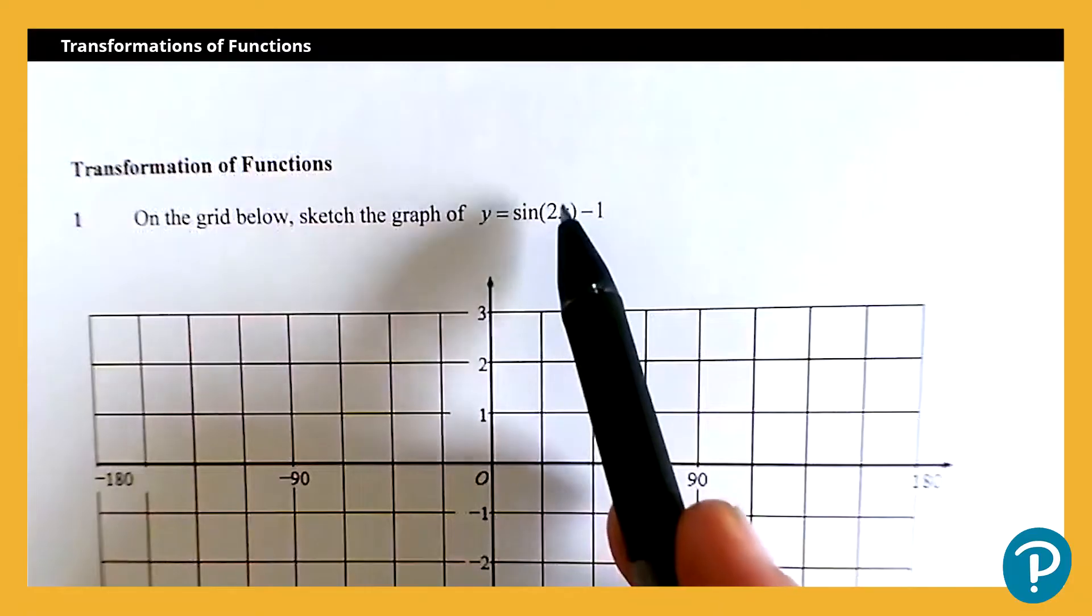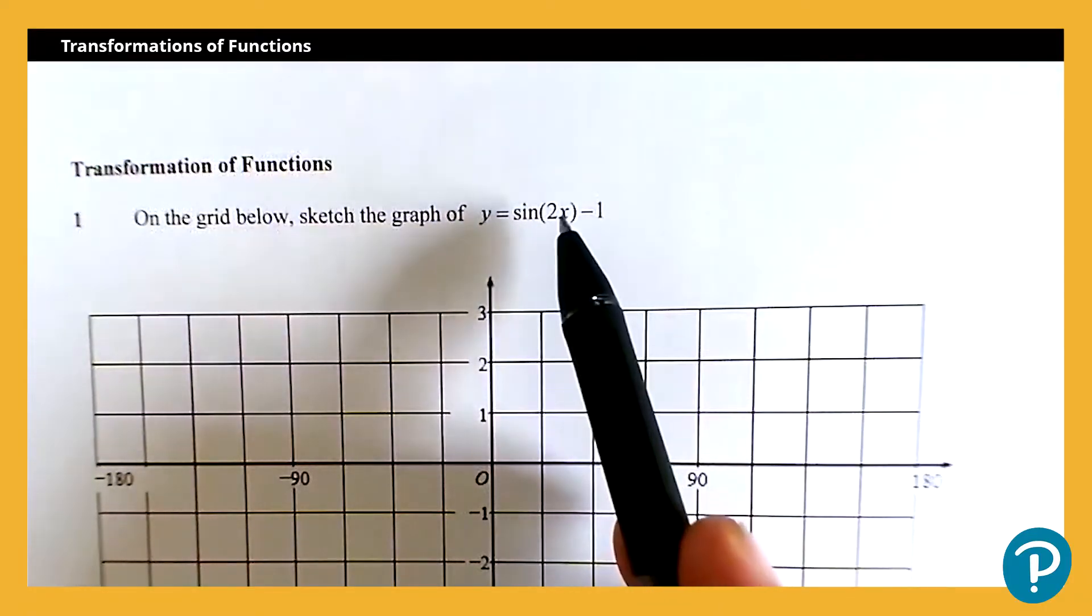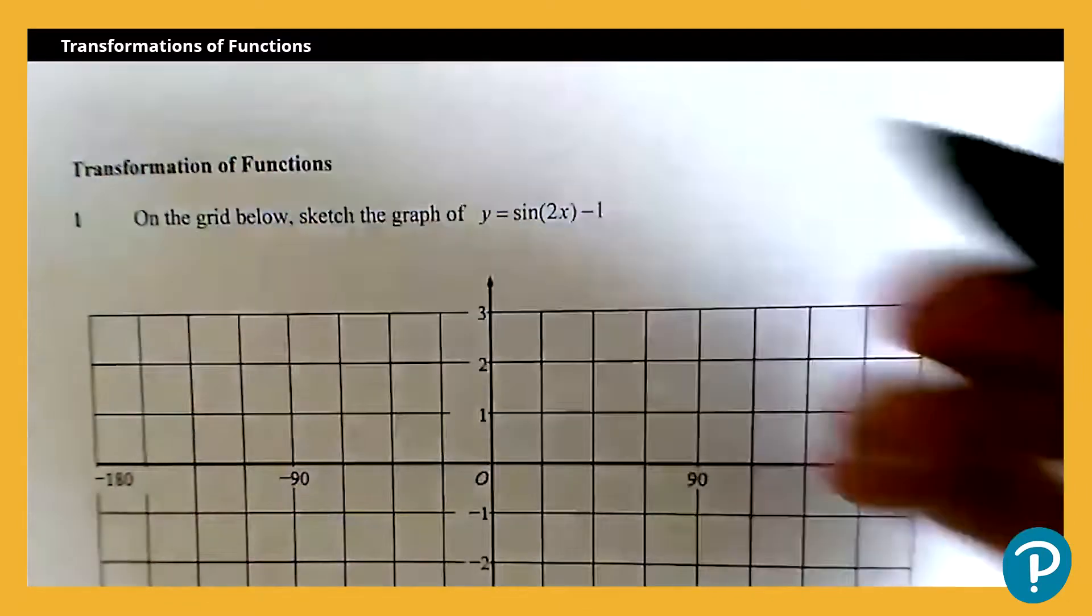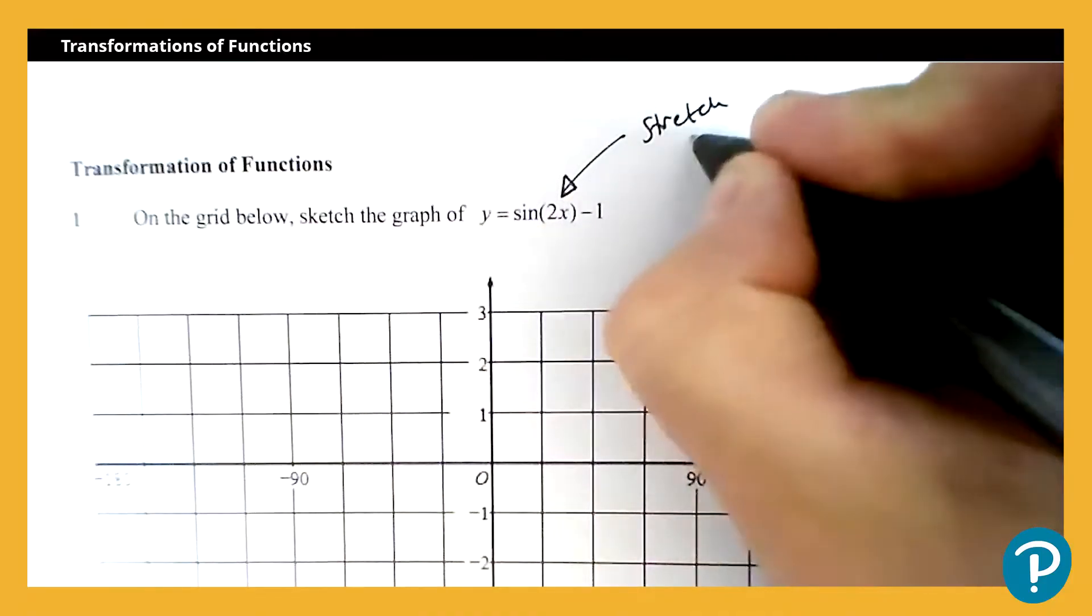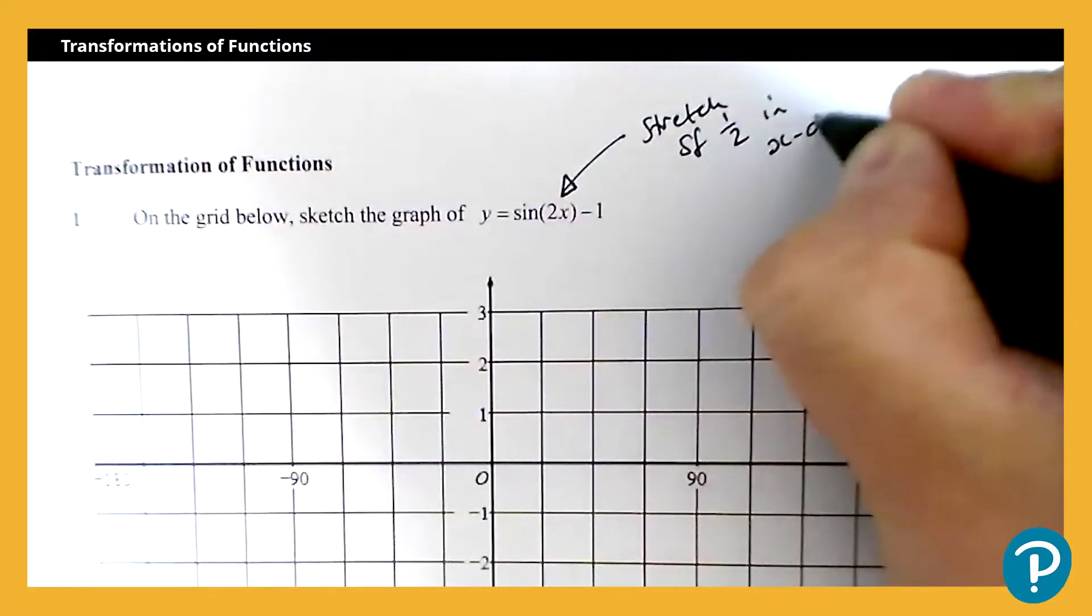The term here, the 2, is telling me that I'm doing a stretch in the x direction. Now the scale factor of the stretch, and this is where a lot of people will often make mistakes, is not a stretch of scale factor 2, it's a stretch of scale factor 1/2. So that's a half in the x direction.